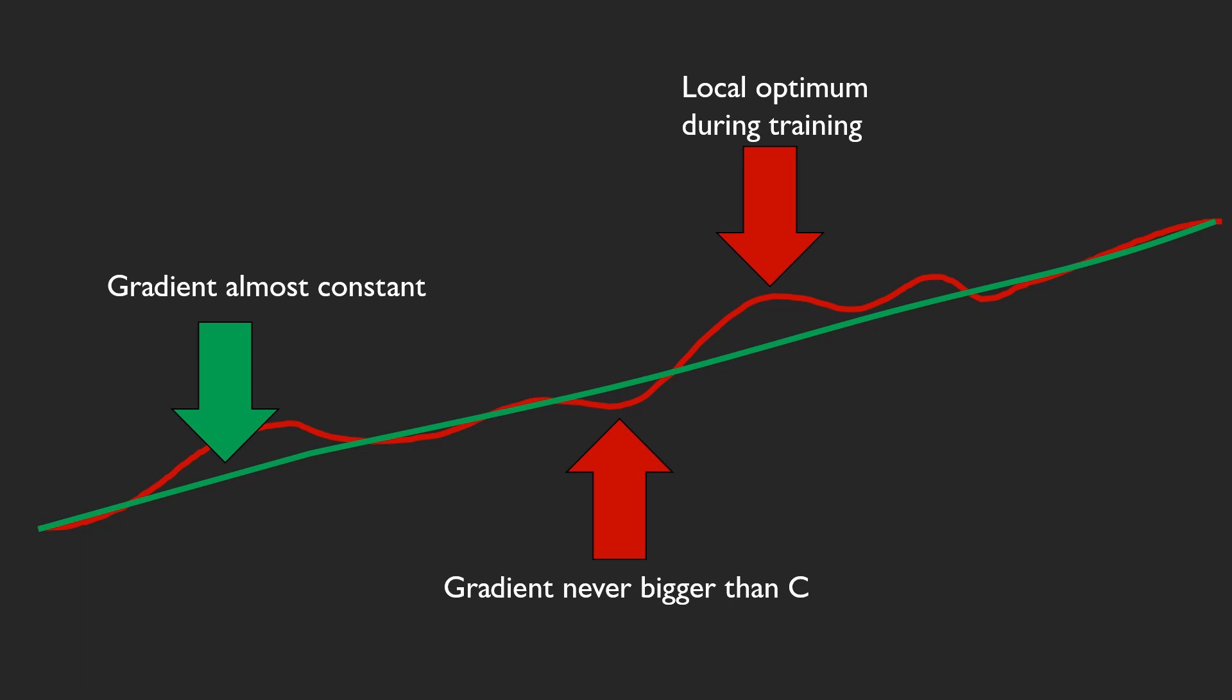Which in theory means that there is no local optimum anymore. A function, a neural network, with a constant gradient like one everywhere, has not one spot where the gradient is zero. It is just some linear function. And as we all know, a local optimum has always a gradient of zero. And on such a linear function, we can train even better.